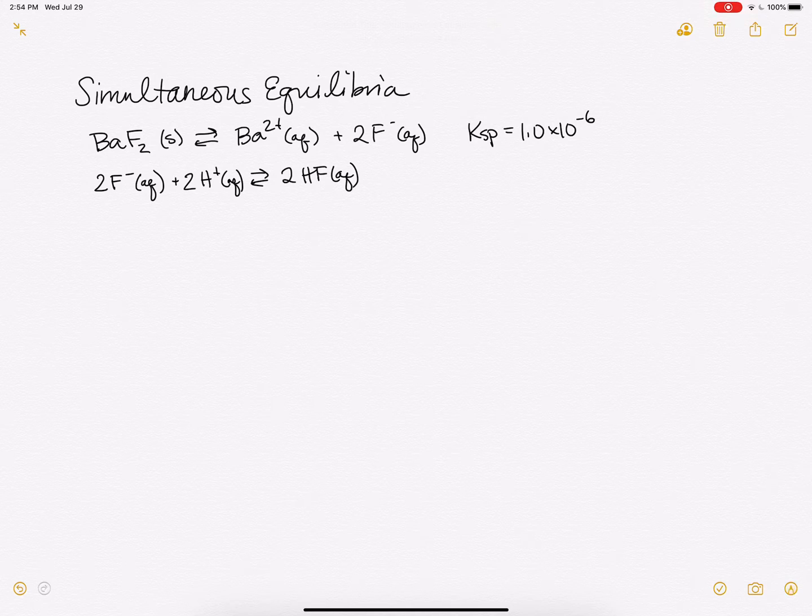Now you'll see this is just the Ka written in reverse. If we wrote it the other way with HF on the left, it would be Ka. But because it's not, it's 1 over the Ka. And you'll also notice that I multiplied by 2 throughout, so I've got to square my value here. So this will be 1 over, and the Ka value is 6.6 times 10 to the minus 4. So that'll be our K for that.